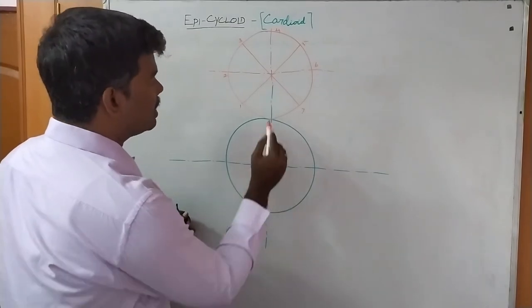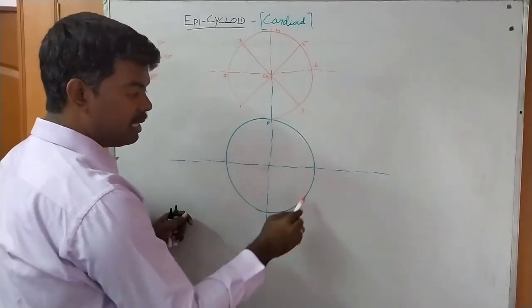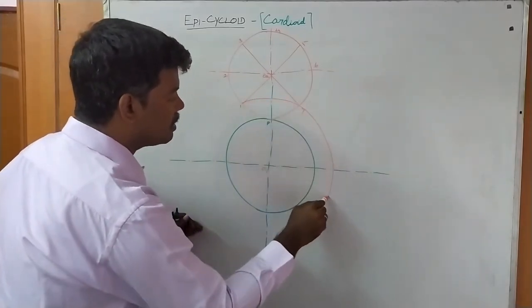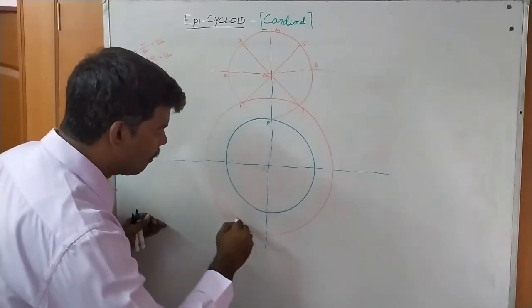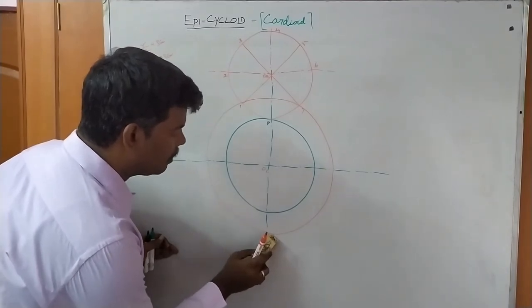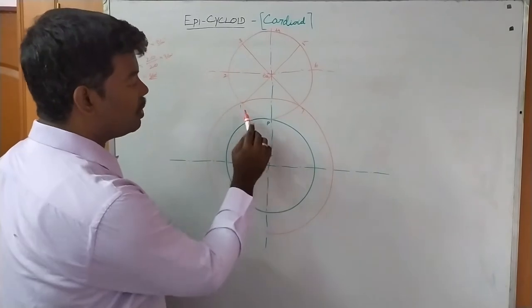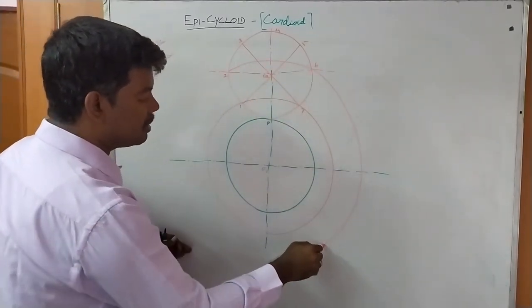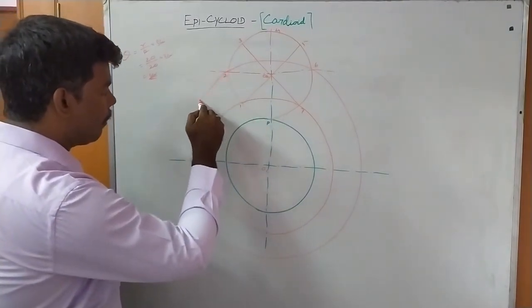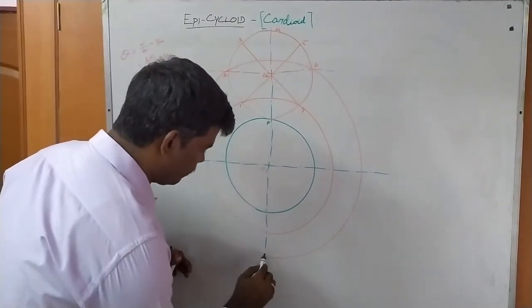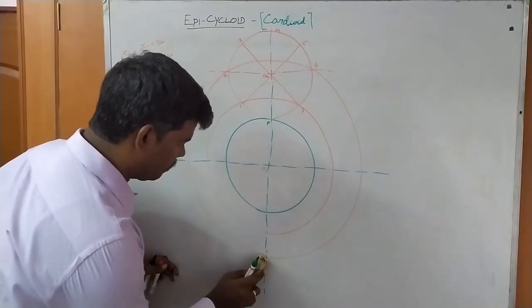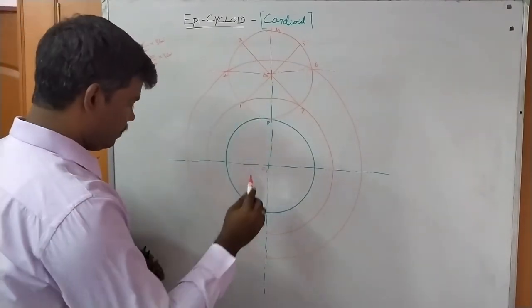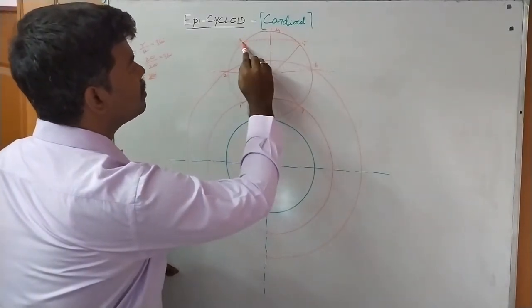Center O1 and center O2 are marked. From O1 to point P is the starting radius. Then with O1 as center and O1-to-1 as radius, draw one concentric circle. Note that the O1-to-1 radius curve also passes through point 7. Next, with O1-to-2 as radius, draw another concentric curve. Continue: O1-to-3 passes through point 5.